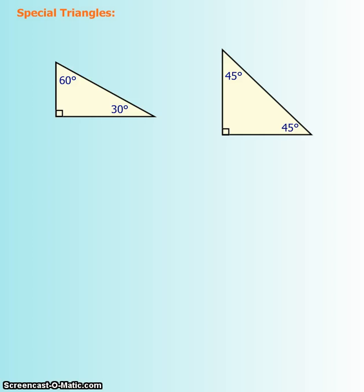Let's move on to the special triangles. There are two special triangles that give way to your special angles, and this is something you're going to have to memorize. The easier one to memorize would be the isosceles triangle, the one on the right.